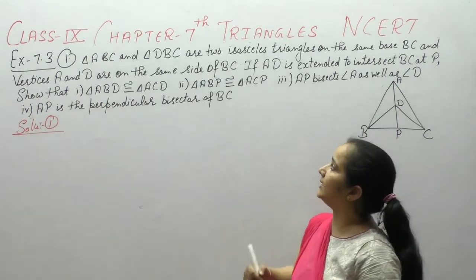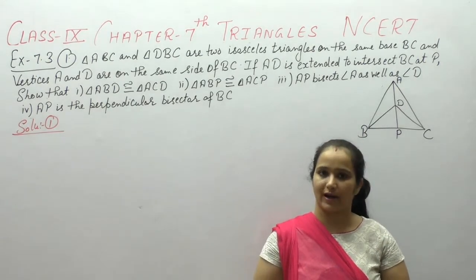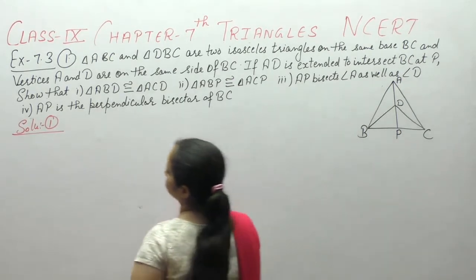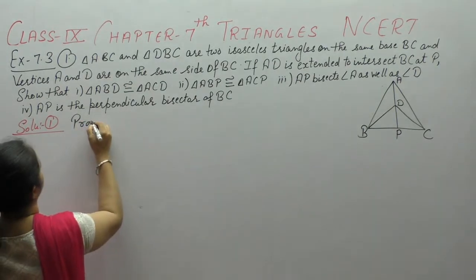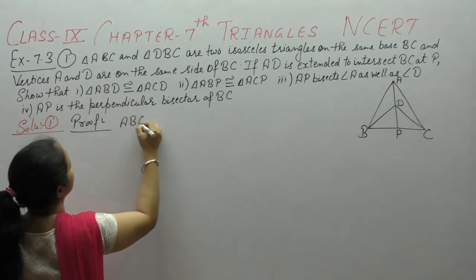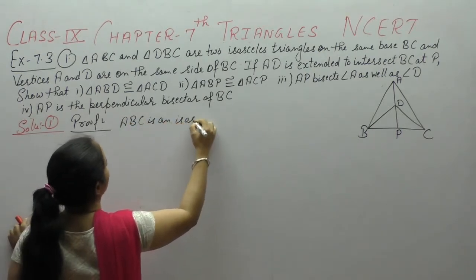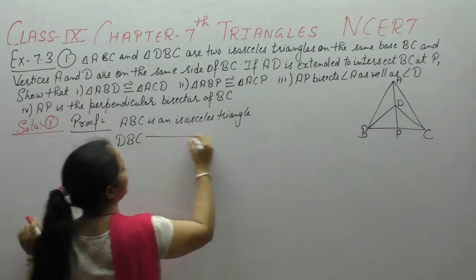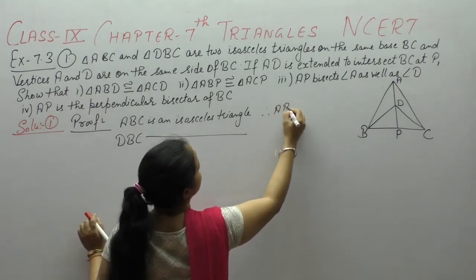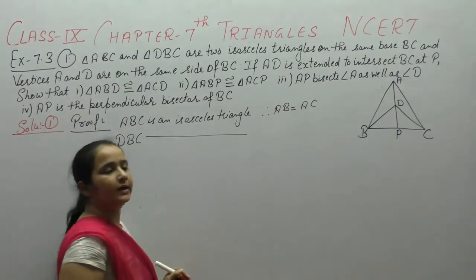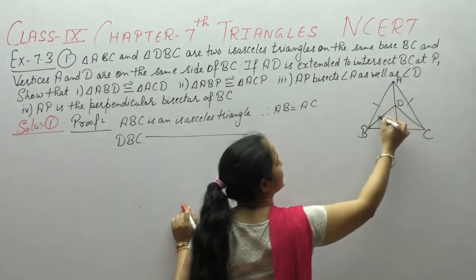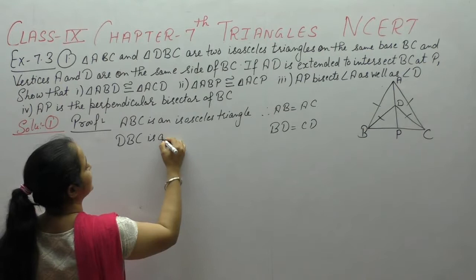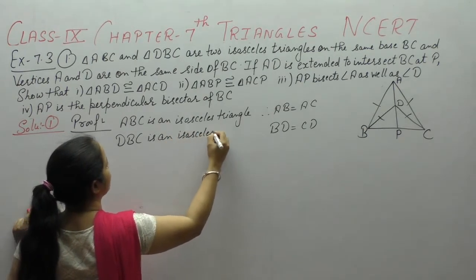First we will write the given information. Triangle ABC and triangle DBC are isosceles triangles. Since ABC is an isosceles triangle, AB is equal to AC. Since DBC is an isosceles triangle, BD is equal to CD.